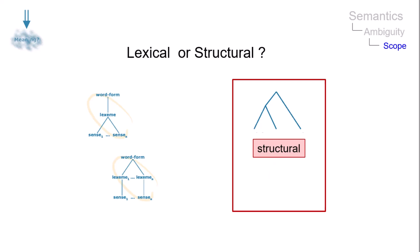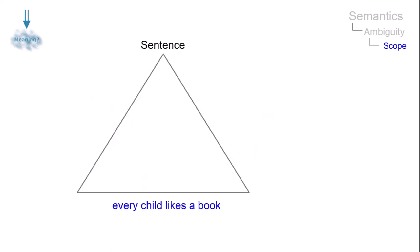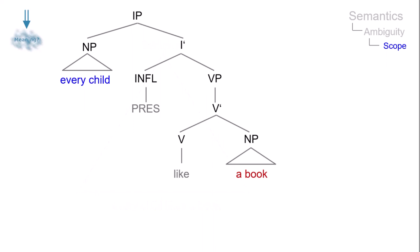However, only a single constituent structure is involved. For example, the sentence, every child likes a book, has one constituent structure, but two interpretations.